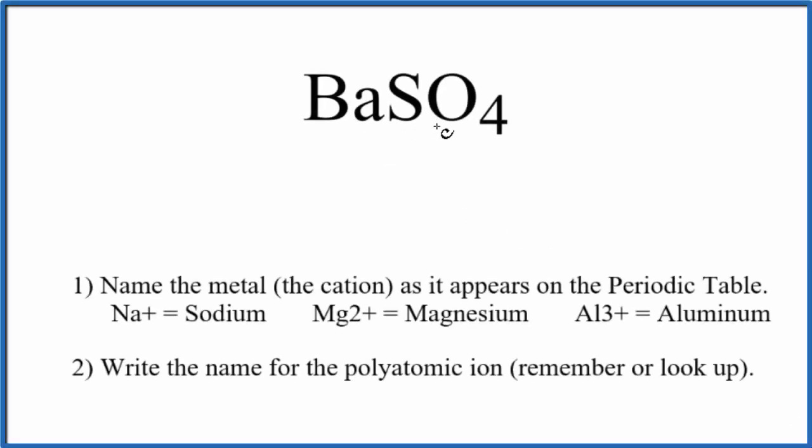To write the name for BaSO4, the first thing we need to realize is this SO4 here. This is the sulfate. It's a polyatomic ion, so the sulfate ion SO4.